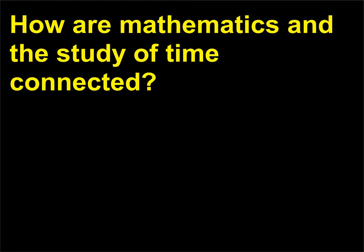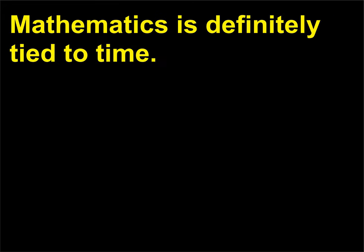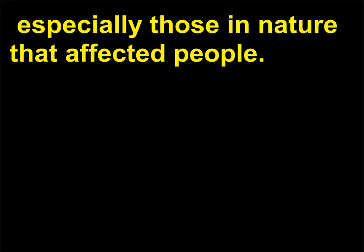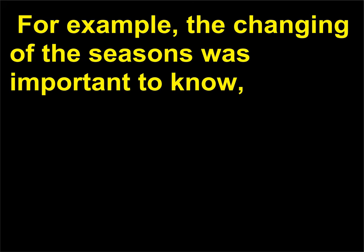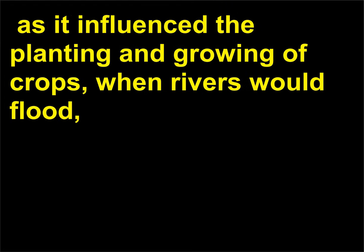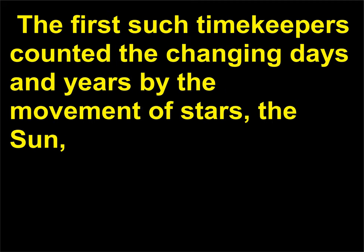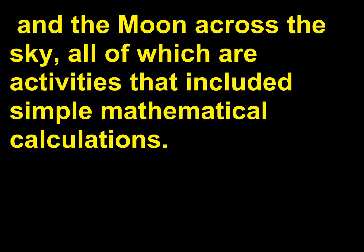How are mathematics and the study of time connected? Mathematics is definitely tied to time. There has long been a need in human civilizations to record many sequences of events, especially those in nature that affected people. For example, the changing of the seasons was important to know, as it influenced the planting and growing of crops, when rivers would flood, and even when weather would change from monsoon rains and harsh droughts to potential blizzards. The first such timekeepers counted the changing days and years by the movement of stars, the sun, and the moon across the sky, all of which included simple mathematical calculations.